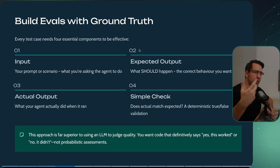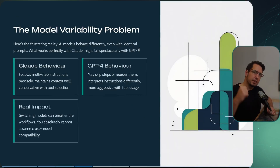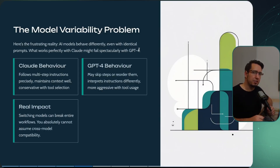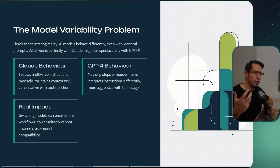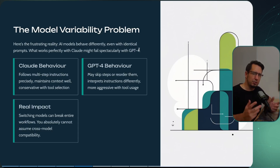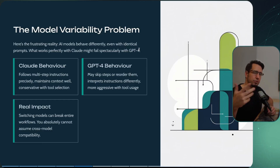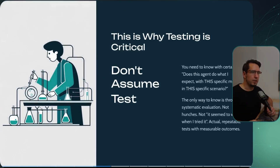You need to validate the actual output of the agent and have simple checks for what that output is. Another important thing: different models behave differently. For example, Claude will follow a very good multi-step order, whereas GPT-4 might skip or reorder steps. You need to make sure the prompt fits the model — even something like markdown versus XML formatting can matter. There's a better prompt format for different models, so you need to test this to really understand the real impact.